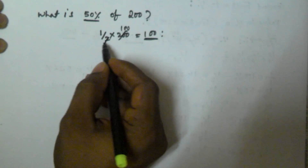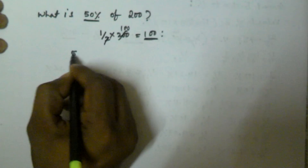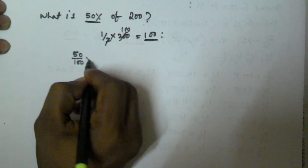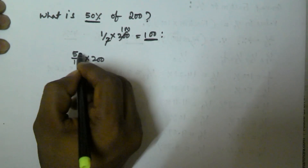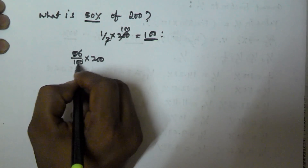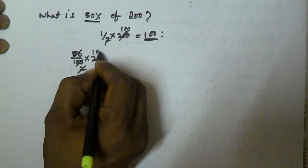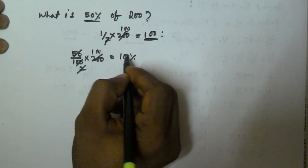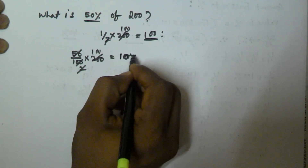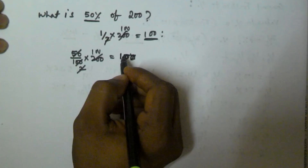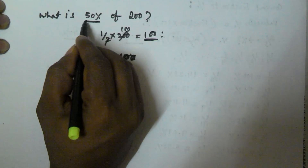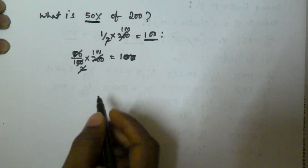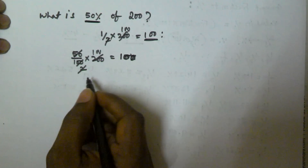If you do not remember this value, you have to calculate 50/100 into 200, and your calculation will be much longer. That's why remembering the corresponding fractions will help in solving the problem.